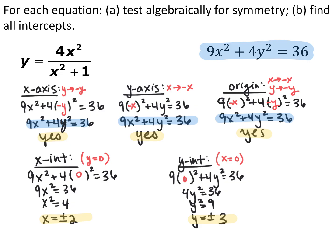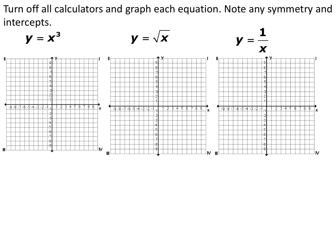To summarize: for symmetry testing, let the opposite variable be negative and see if it simplifies to the original — for origin symmetry, do both. For intercepts, let the opposite variable equal 0 and solve. Now for some graphing: we have three functions — y equals x cubed, y equals the square root of x, and y equals 1 over x. Try making xy tables without any graphing utilities, sketch each graph, and note any symmetry and intercepts.